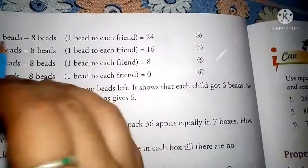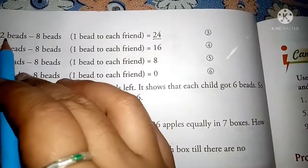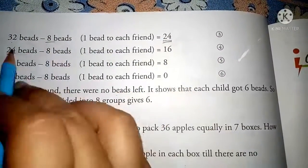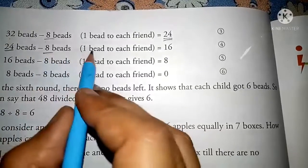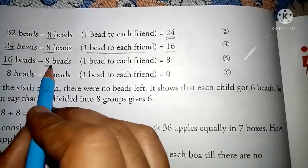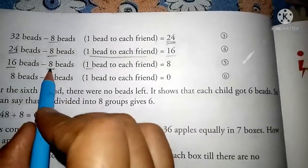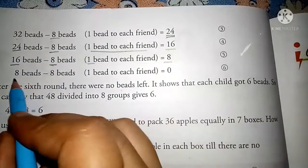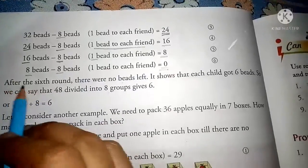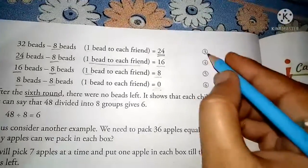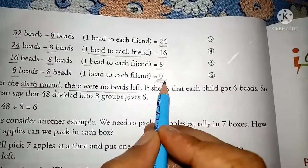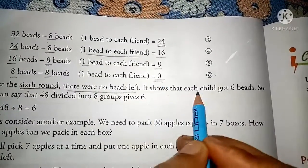48 beads minus 8 beads, 1 bead to each friend, equals 40. 40 beads minus 8 beads equals 32. 32 beads minus 8 equals 24. 24 minus 8 equals 16. 16 minus 8 equals 8. 8 beads minus 8 beads, 1 bead to each friend, equals 0. After the 6th round, there were no beads left.